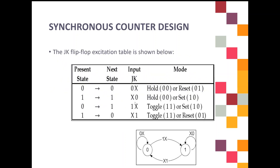Here is the JK flip-flop excitation table. The most important thing for this JK flip-flop is the input J and K. You will use these inputs J and K in your excitation table as a step in designing the synchronous counter circuit. Based on this excitation table, you have four transitions of state from present state to next state.